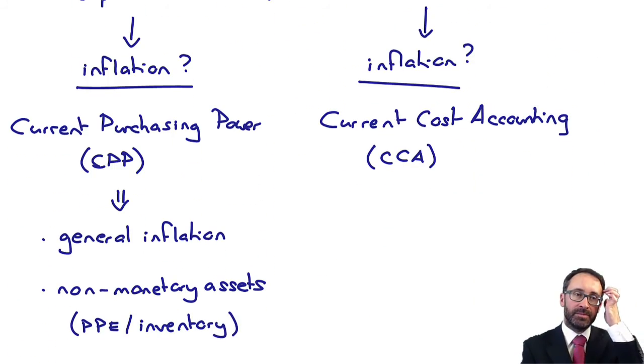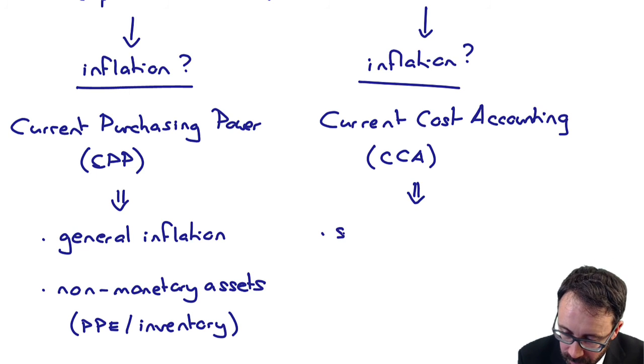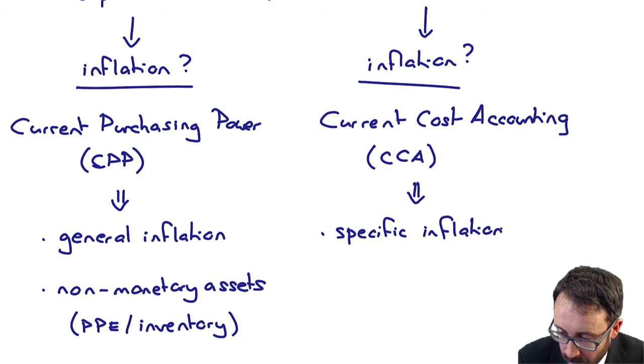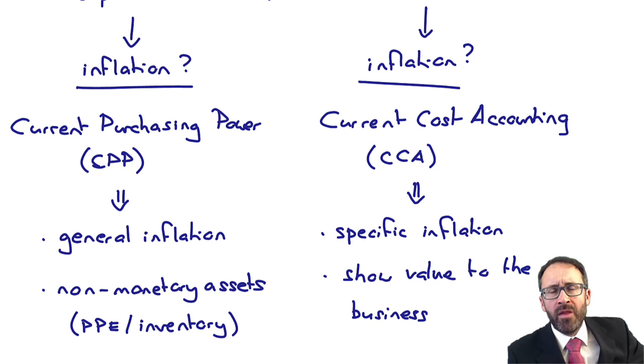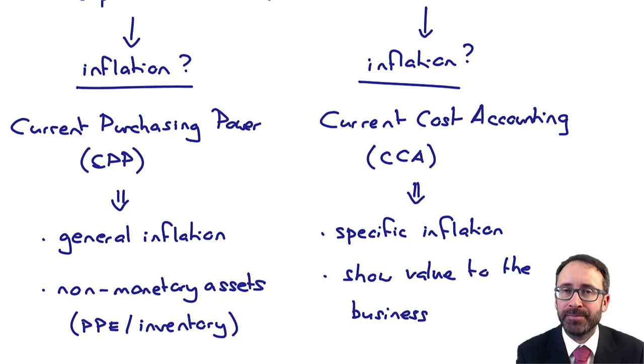With your current cost accounting, you're going to make specific inflation adjustments to show the value to the business. So we have these assets, what are they worth? How much could we effectively purchase now?